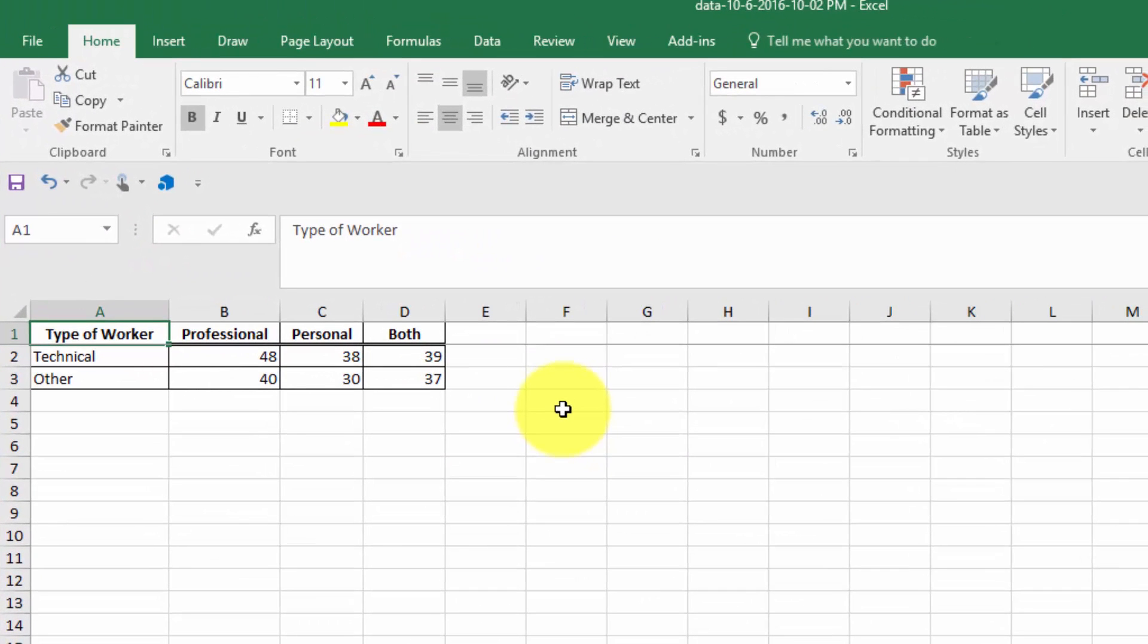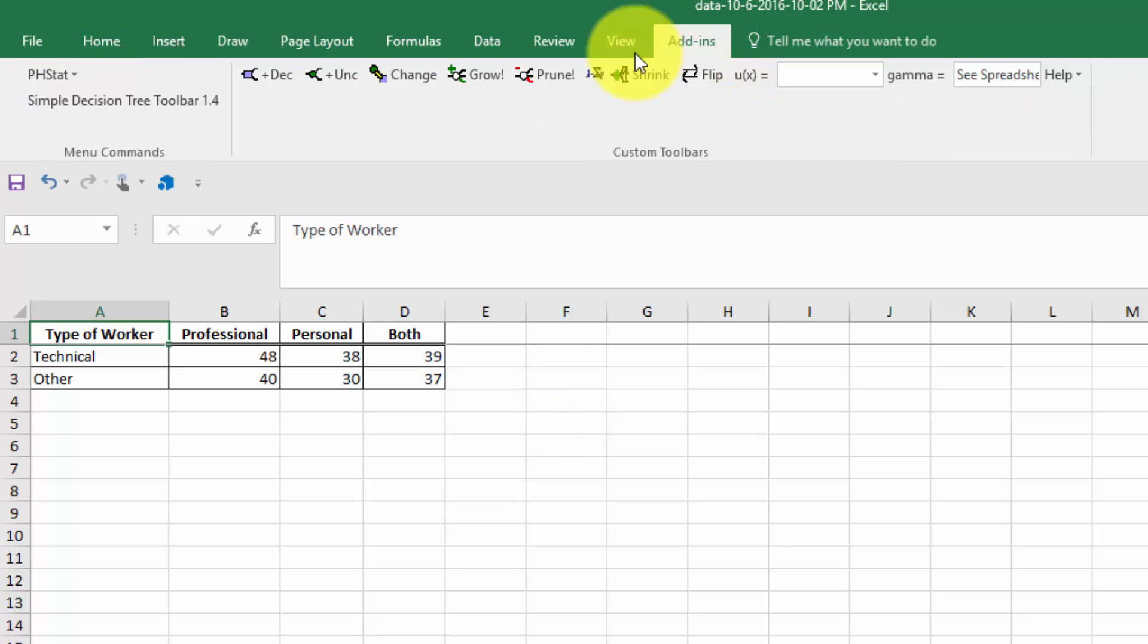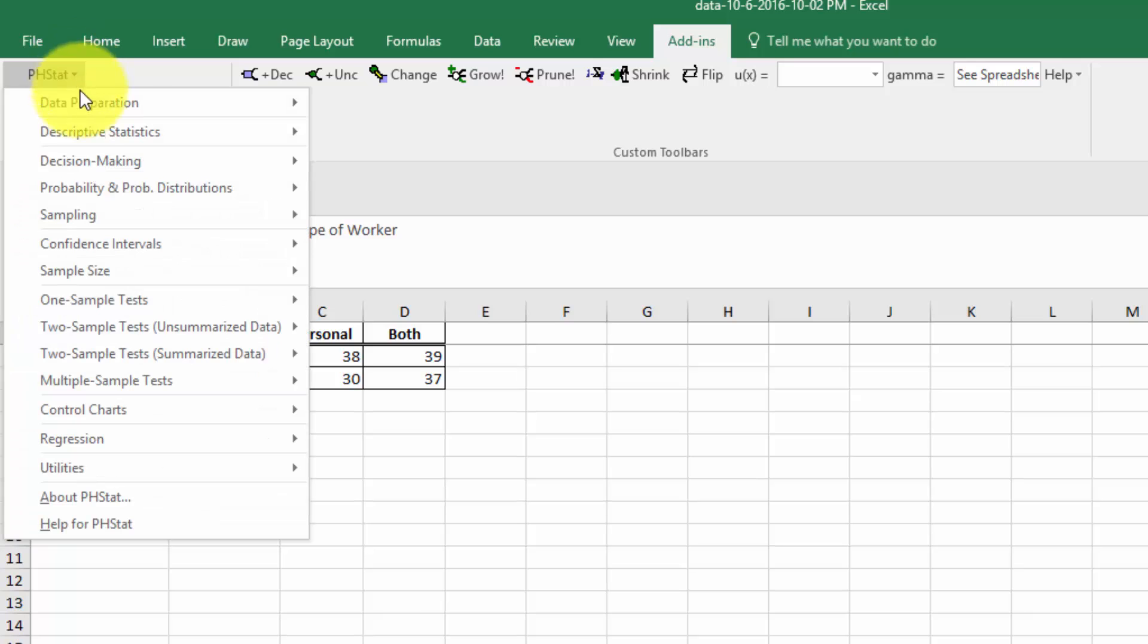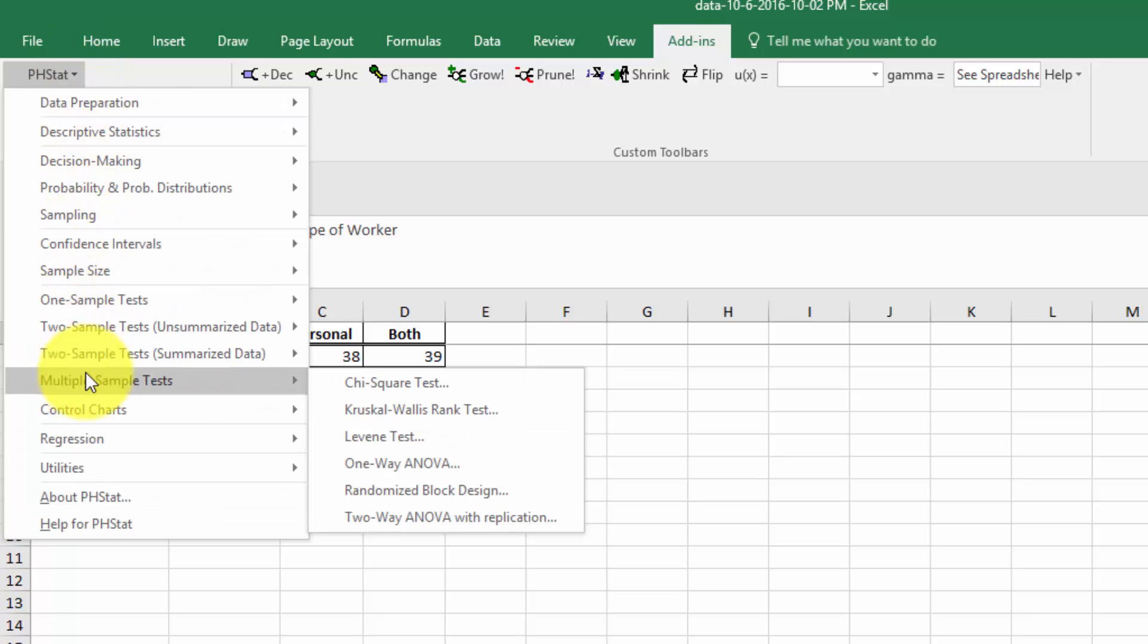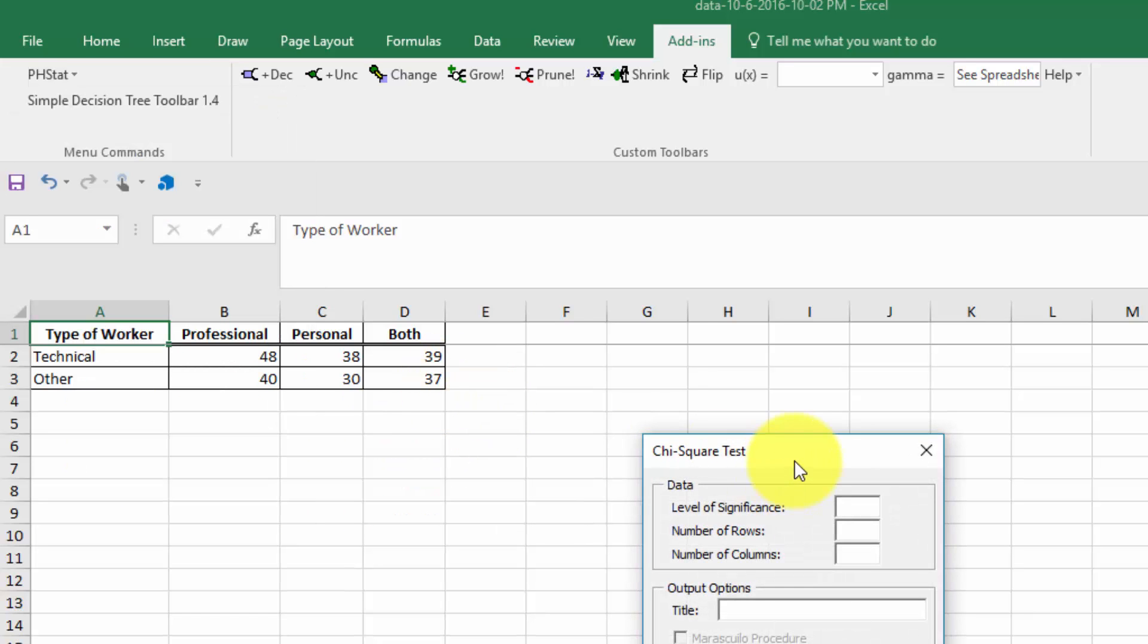Now we want to do a chi-square test. So we go to the add-ins tab, over to PHStat, multi-sample test, and we select chi-square test.